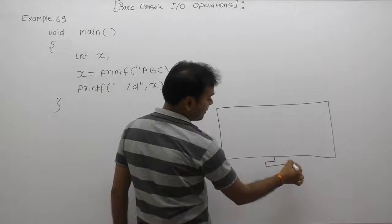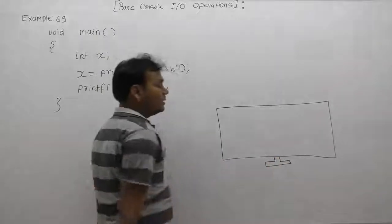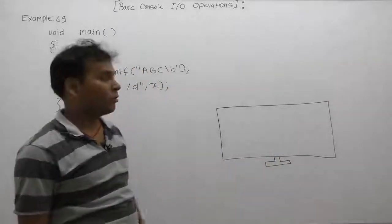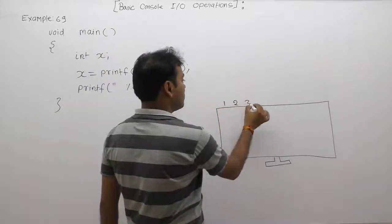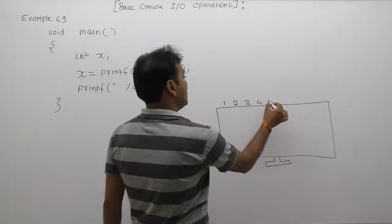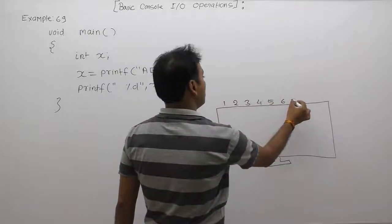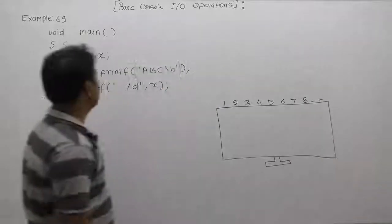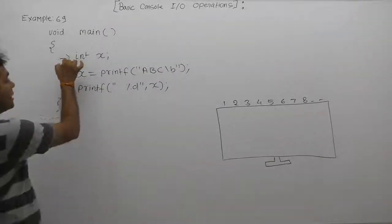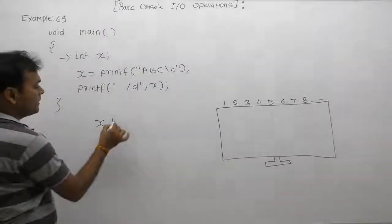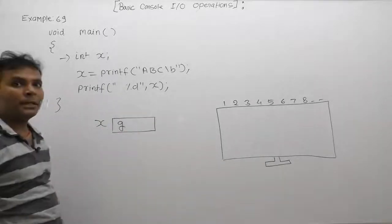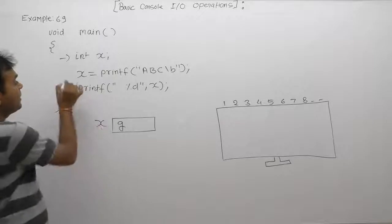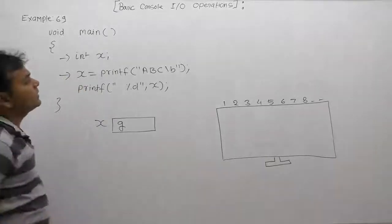Printf will count both types of characters: printable as well as non-printable. In that case, first of all we are declaring some variable as x, same as previous examples, nothing new. Then the initial value of x is garbage. After that, according to the second statement...